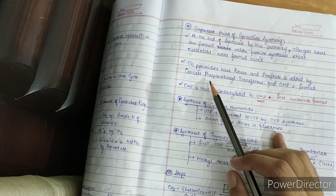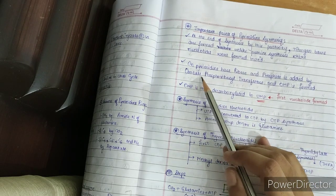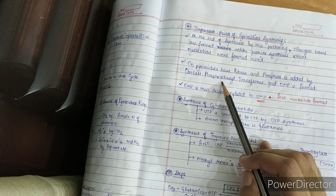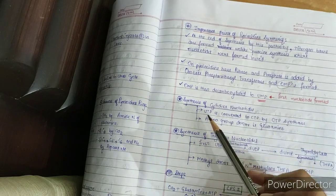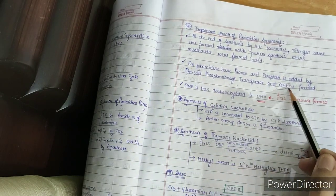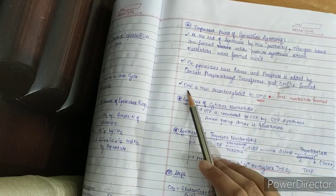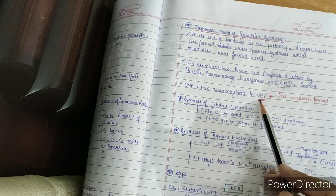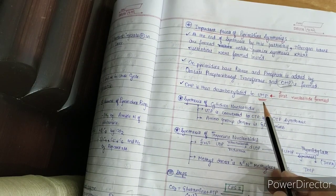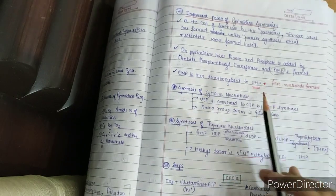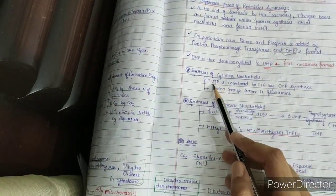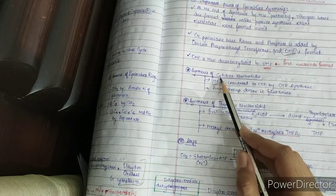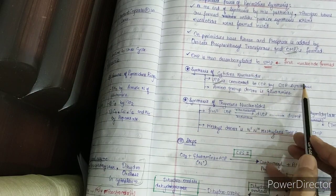Ribose and phosphate are added to the pyrimidine base by the enzyme orotate phosphoribosyl transferase, a component of UMP synthase, forming OMP. OMP is then decarboxylated to form UMP, which can be converted into CTP or TMP. For CTP synthesis: UMP is converted to UTP by addition of two phosphate groups, and then UTP is converted to CTP by the enzyme CTP synthase.